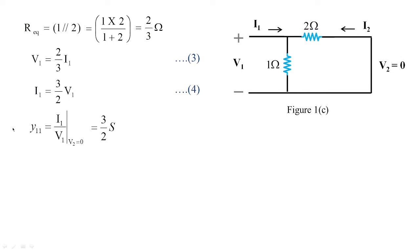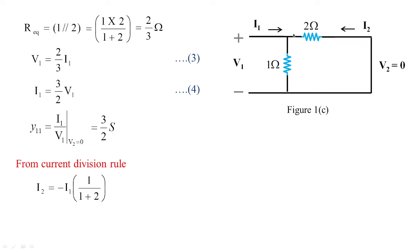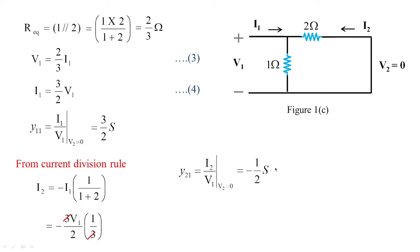For y21, we use the current division rule to find the current through the 2 ohm resistor depending on the primary current I1. From the current division rule, I2 = −I1 × (1/(1+2)), because the current opposes the direction of I2. Substituting I1 = (3/2)·V1 gives I2 = −(3V1/2)×(1/3) = −V1/2. Therefore, y21 = I2/V1 at V2 = 0, whose value is −1/2 Siemens. Hence we have obtained y11 and y21.